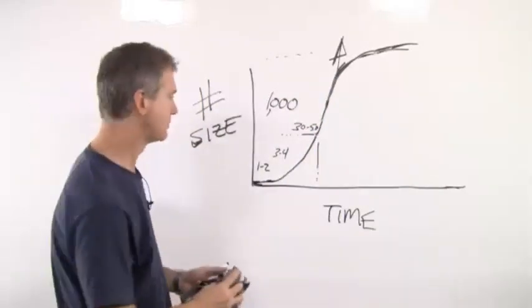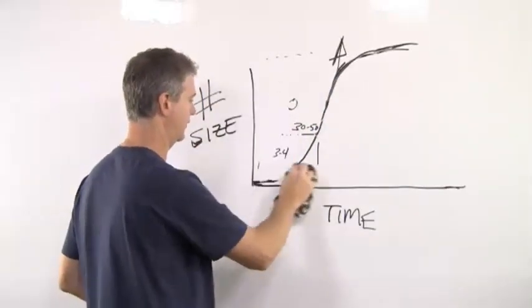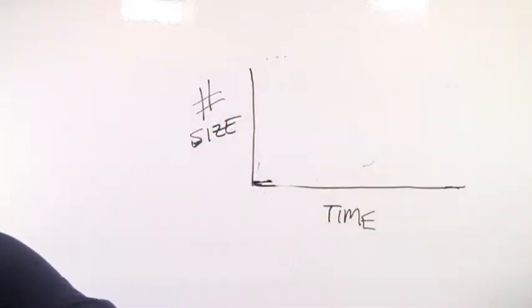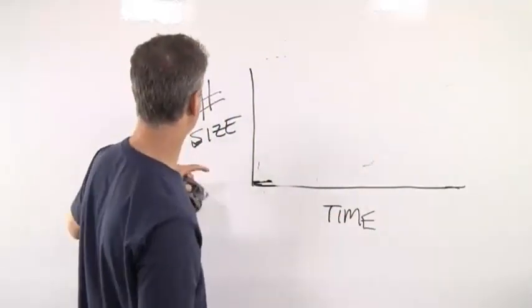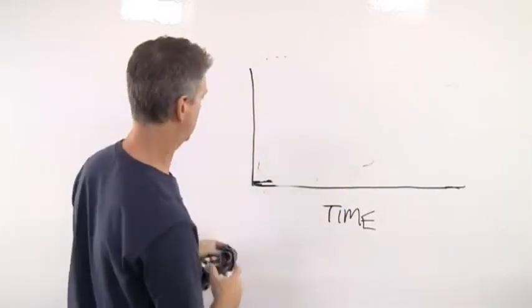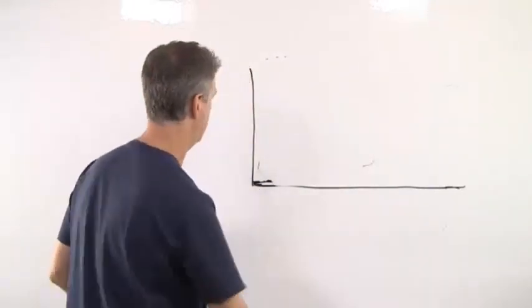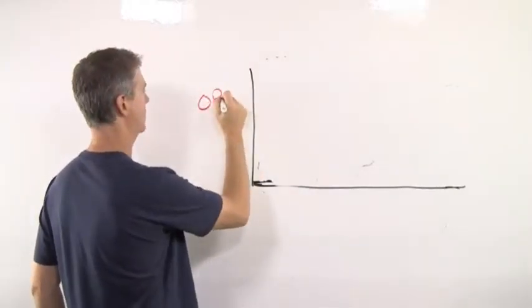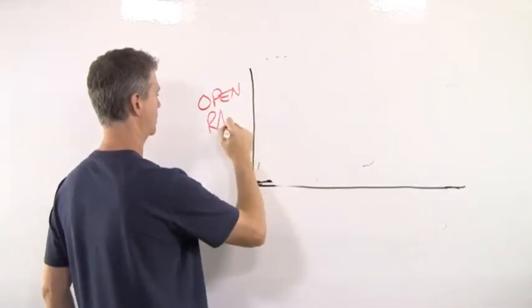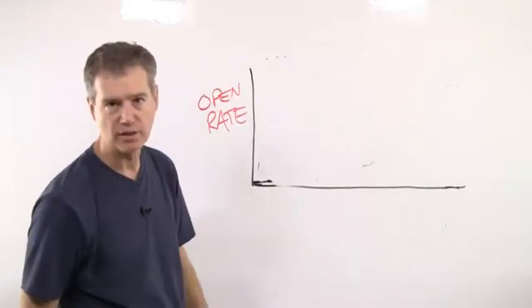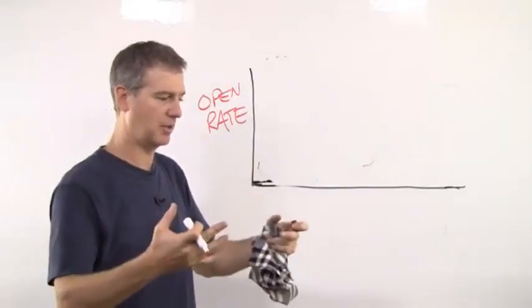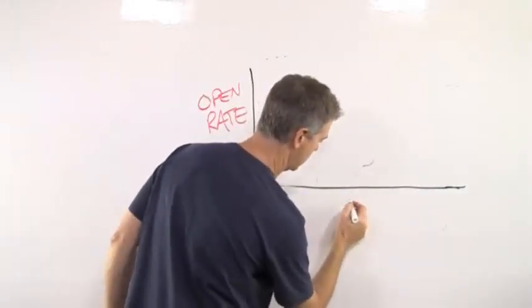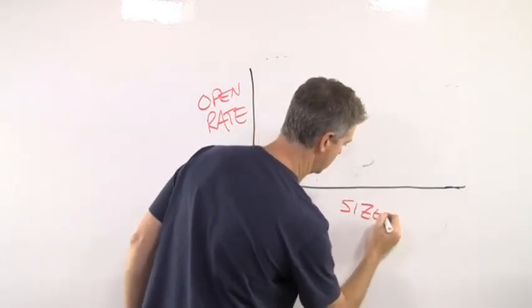Now along that lines, let's draw another graph in here. And just to make it interesting I'm going to change up colors on you. So we're going to say this is your open rate, which is, in other words, what percentage of people actually open your emails? You've got a thousand people in your list, how many of them actually open your emails? What percent? And let's call this, this is the size of your list.